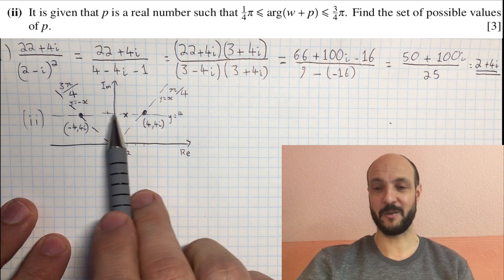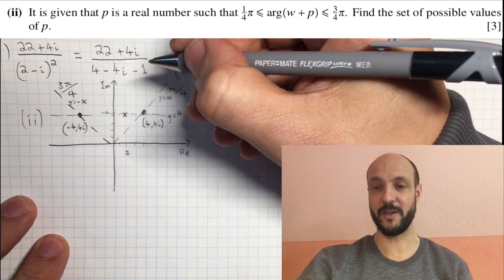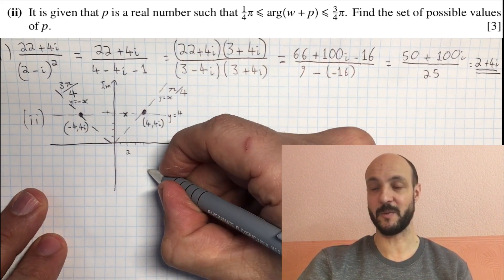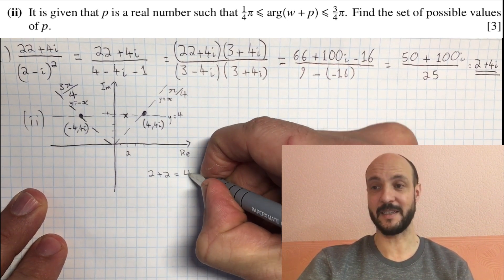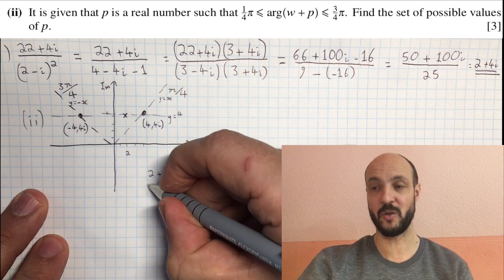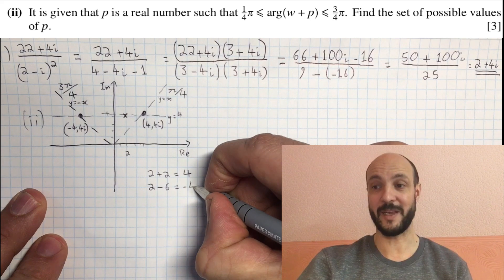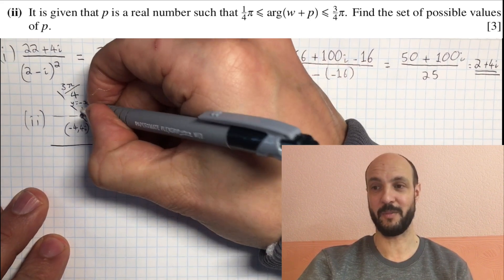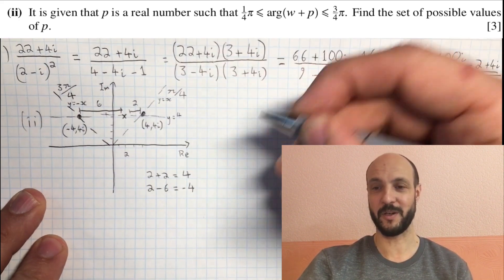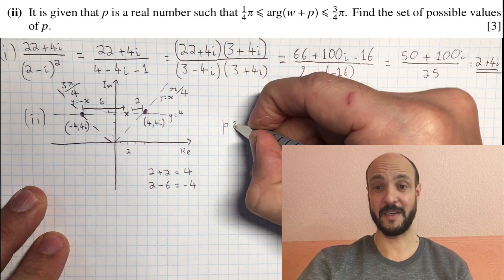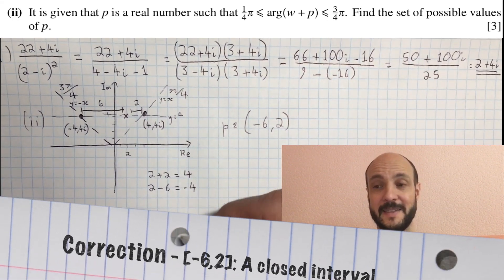And so the answer to our question is saying, what's this p that we can add on, this real number, that will keep the arguments between those two points. So the largest number of p that we can add is 2, because if we go beyond 2, then we're going to go beyond that intersection point. And the largest number we can take away is 6, because if we go beyond 6, 2 minus 6 is minus 4, so we're going to go beyond that point. So our answer, our p, must belong to an open set from minus 6 to 2.